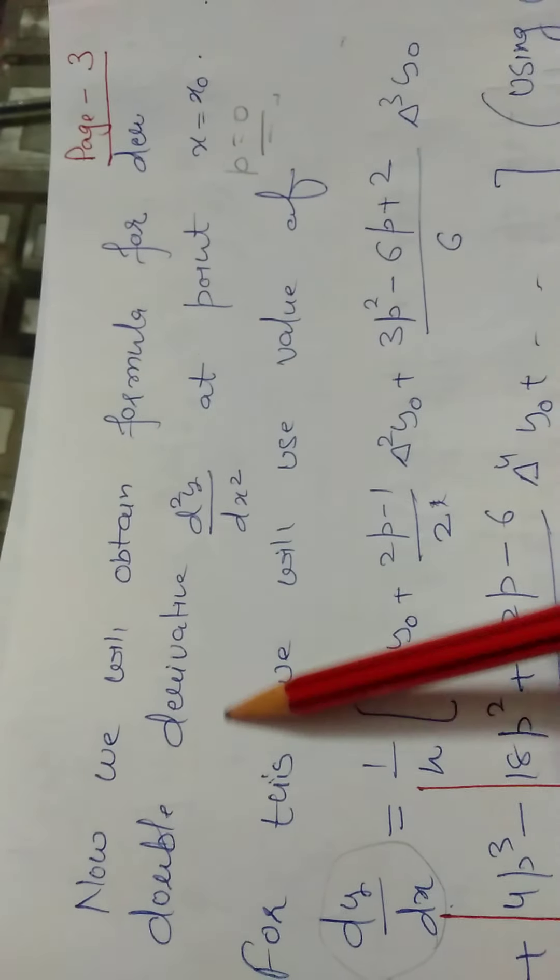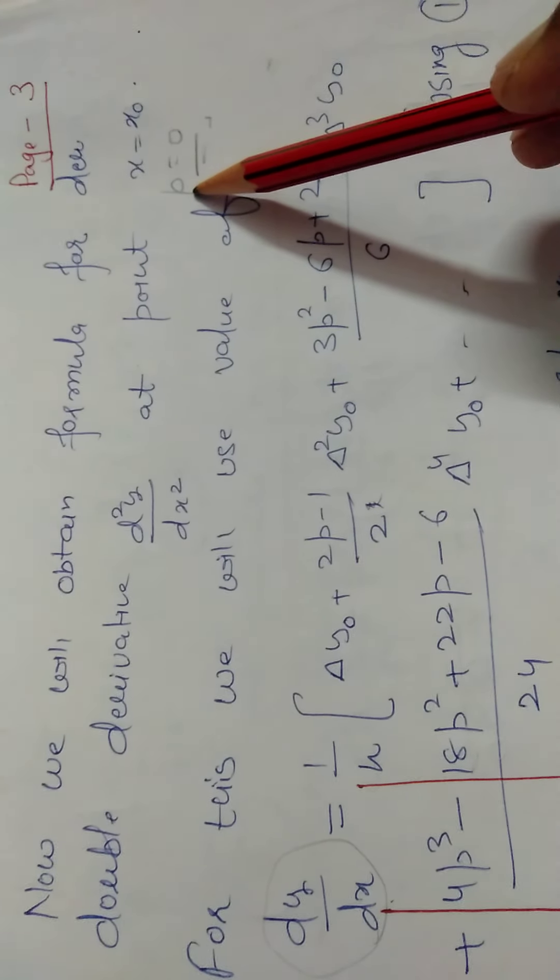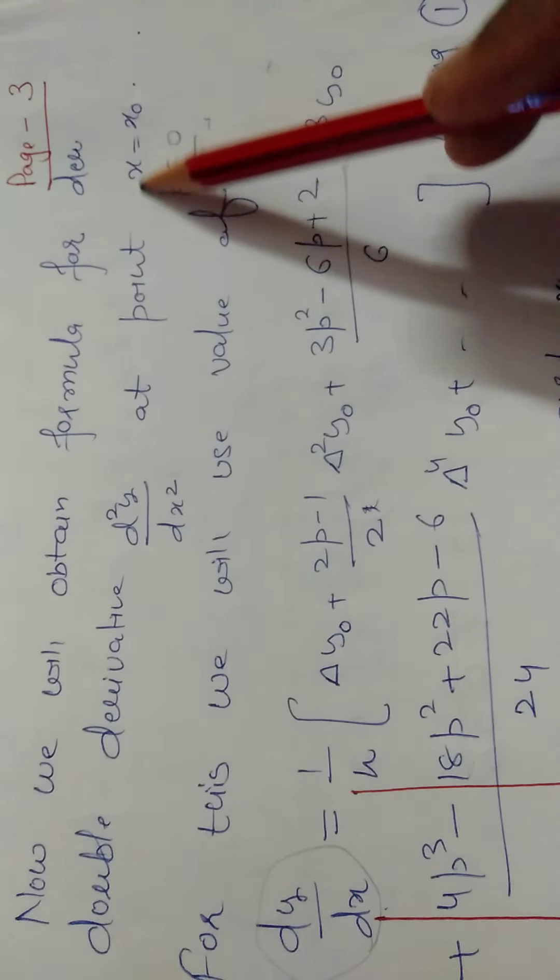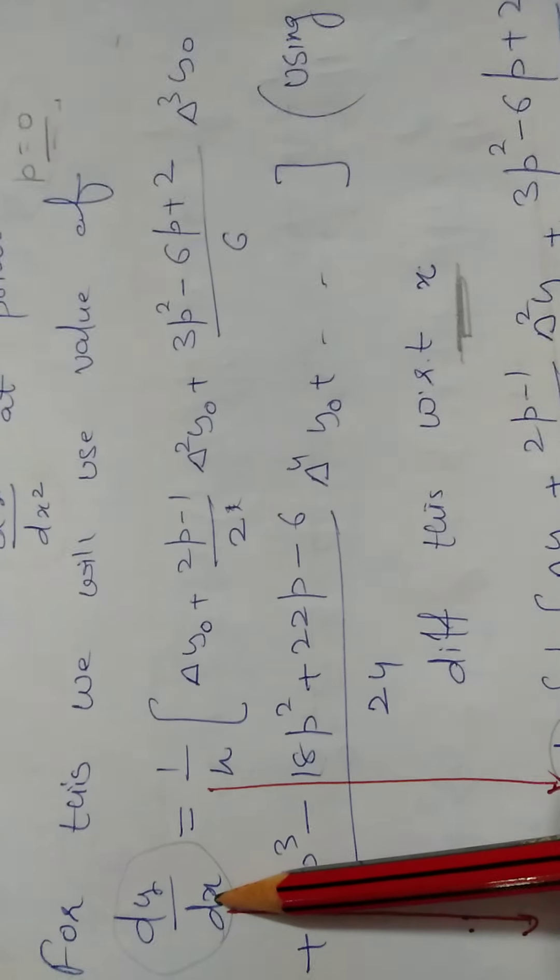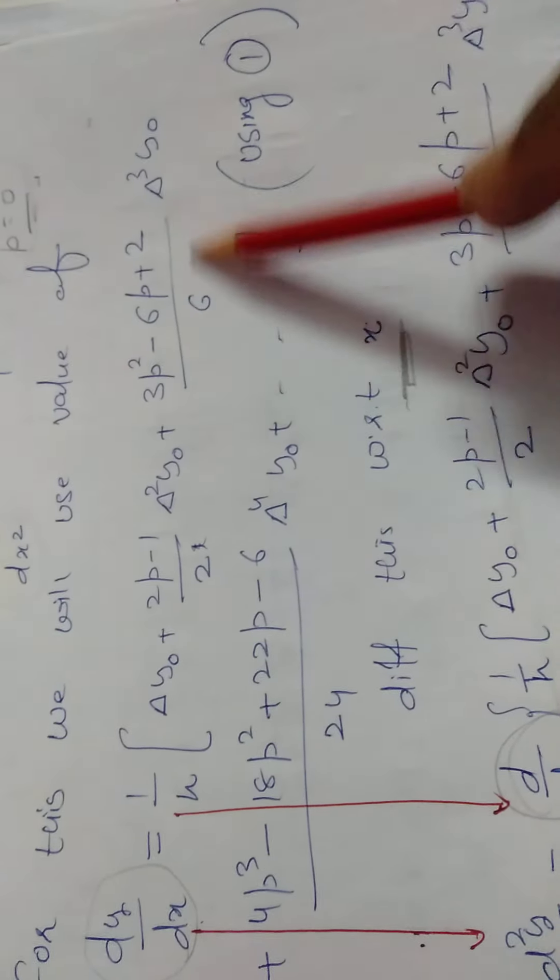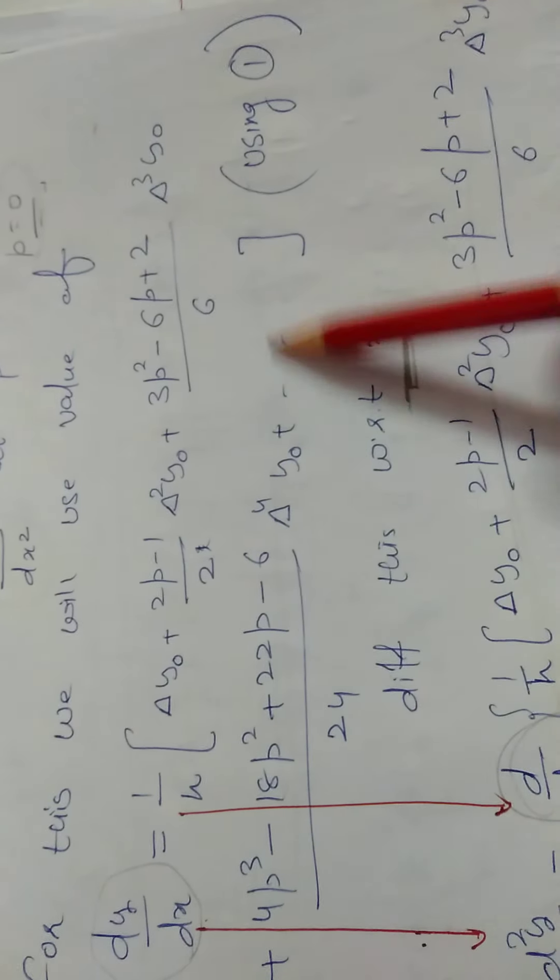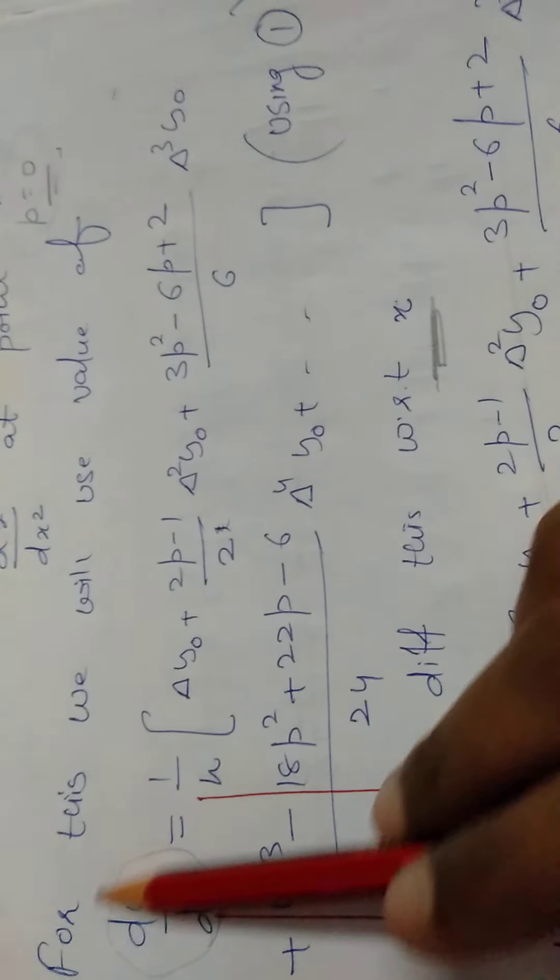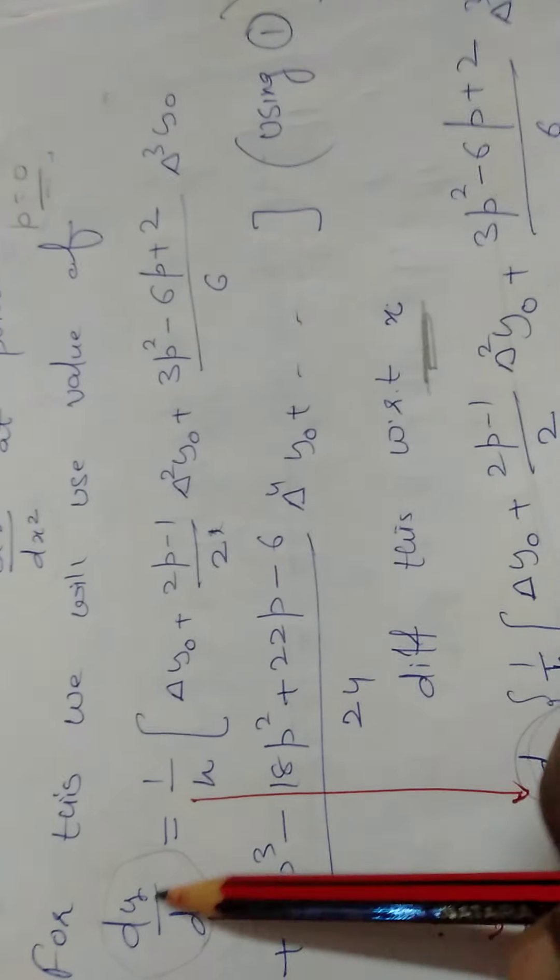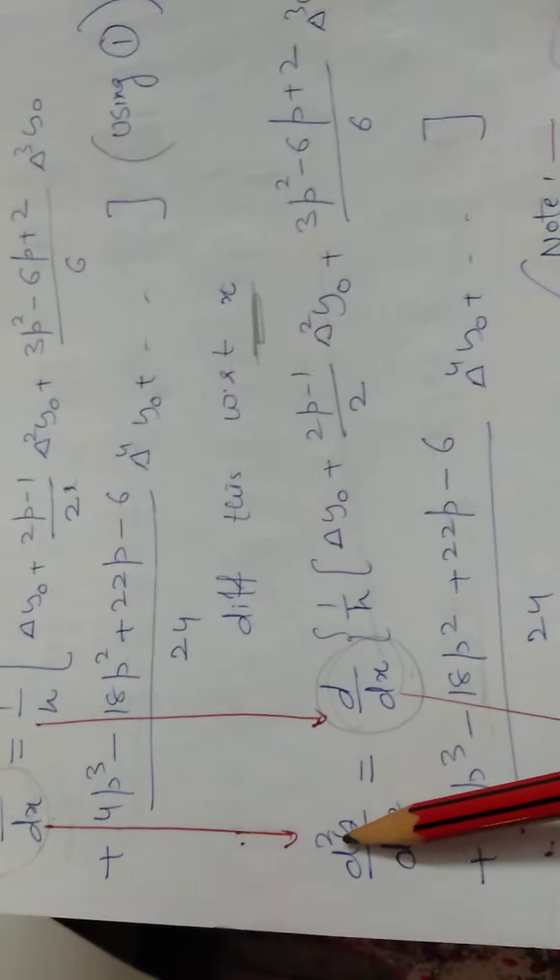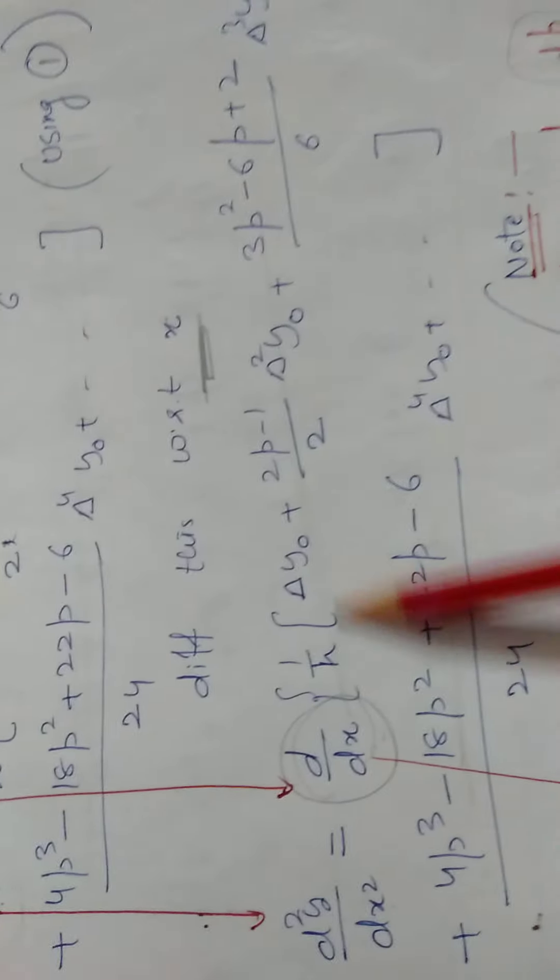Now we obtain formula for the second derivative at point x equals x naught. When x is x naught, we discussed that P becomes 0. For the second derivative, we write the value of first derivative at that P value and differentiate this with respect to x. Remember we are differentiating with respect to x. Left hand side becomes double derivative with respect to x.